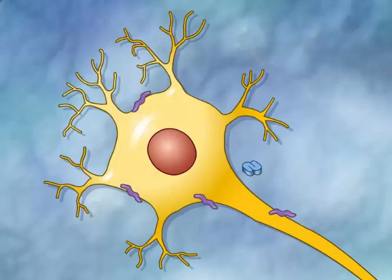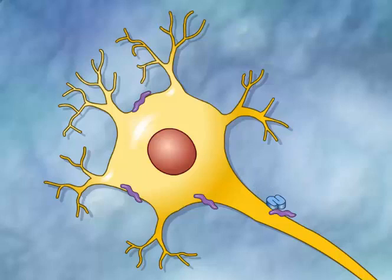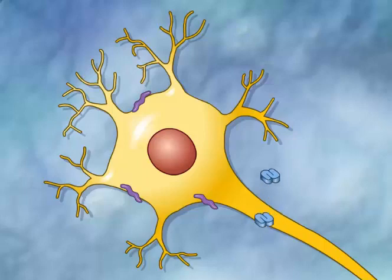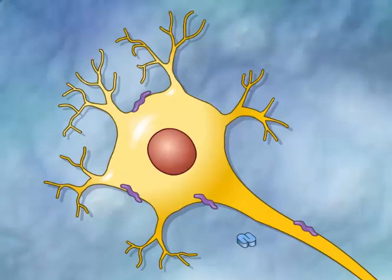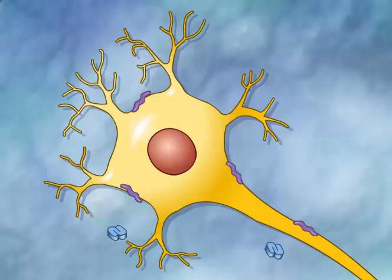It is believed that when PRPSC enters a normal brain, it binds to the normal cellular PRP, PRPC, and induces it to fold into the abnormal conformation. The newly produced PRPSC molecule may then convert more normal PRPC proteins into the abnormal PRPSC form.